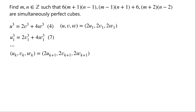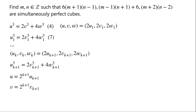When we set u_k, v_k, and w_k to be 2u_{k+1}, 2v_{k+1}, and 2w_{k+1} respectively, we have u_{k+1} cubed equals 2v_{k+1} cubed plus 4w_{k+1} cubed. So u equals 2^k times u_{k+1}, v equals 2^k times v_{k+1}, and w equals 2^k times w_{k+1}. Since u, v, w, u_{k+1}, v_{k+1}, and w_{k+1} are all integers, u, v, and w must be equal to 0.